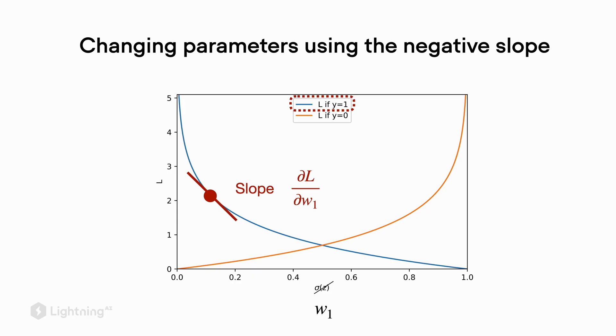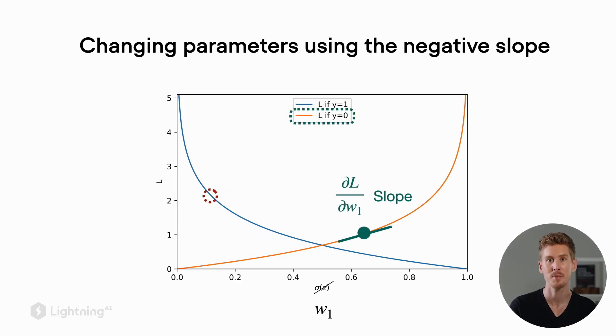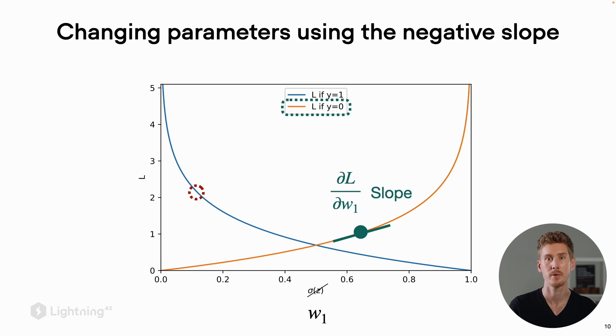However, keep in mind that our training data set consists also of training examples with class label 0. In this case we also have to use the same concept to minimize the loss. So again, for class labels 1 we want the activation as close as possible to 1, and for class label 0 we want the activation as close as possible to 0.